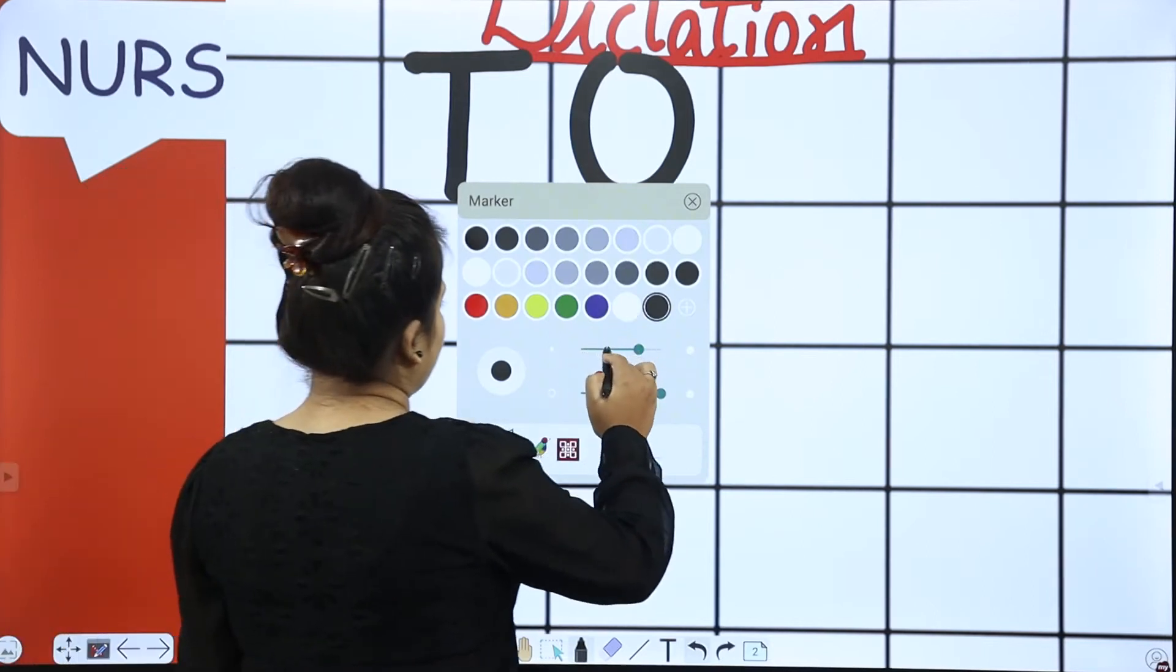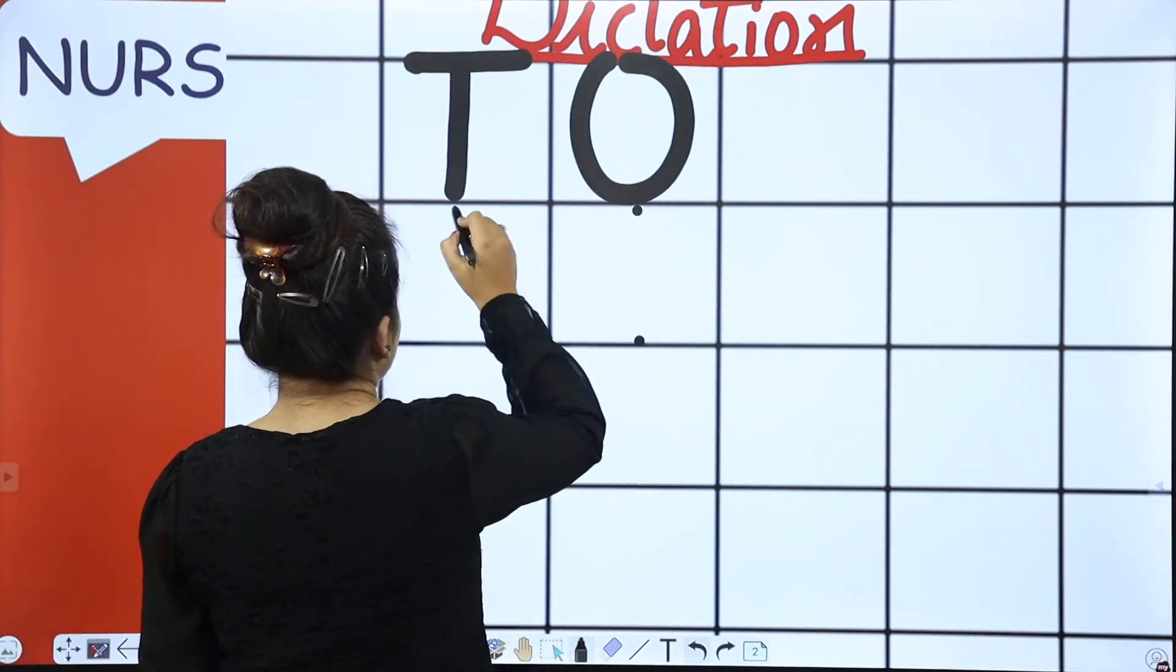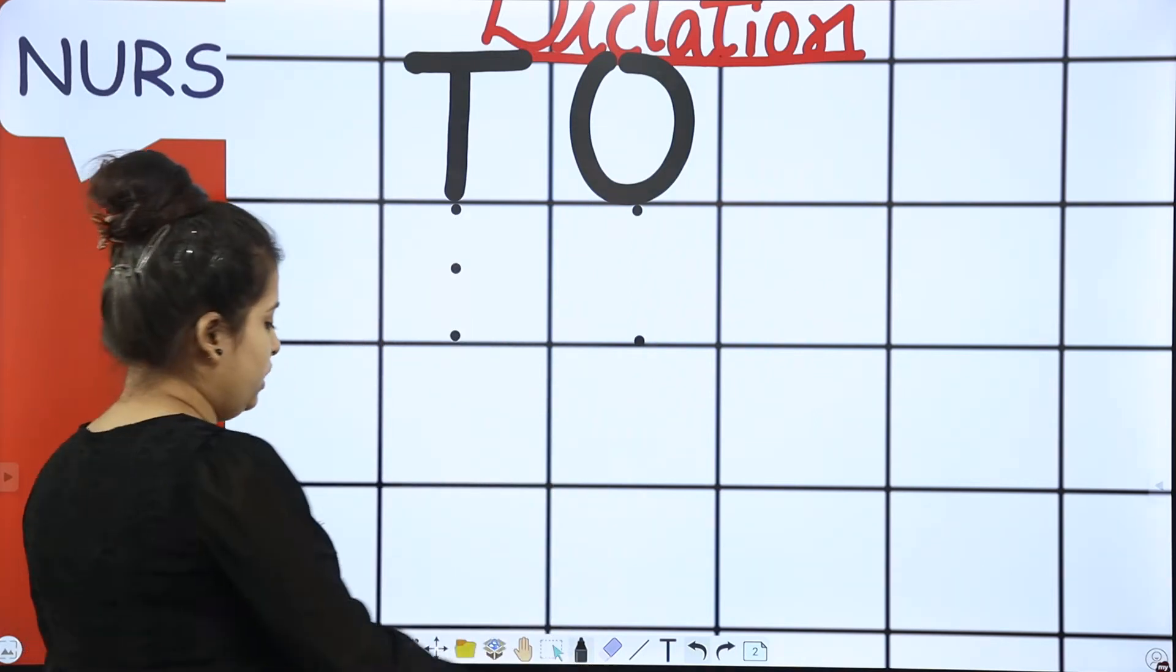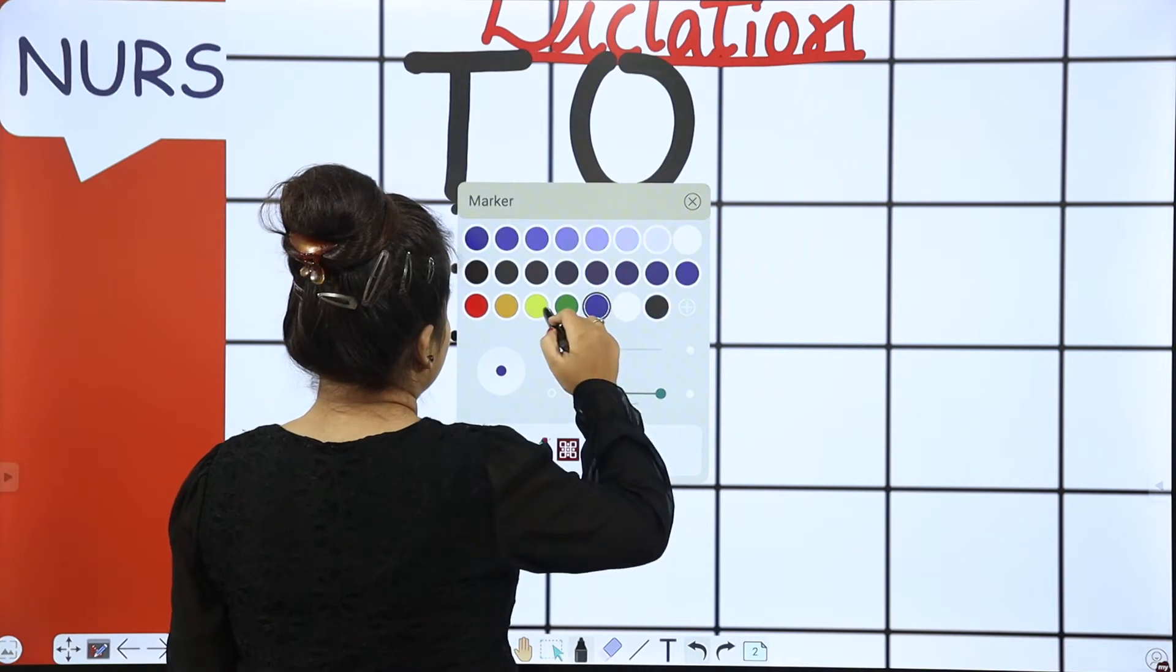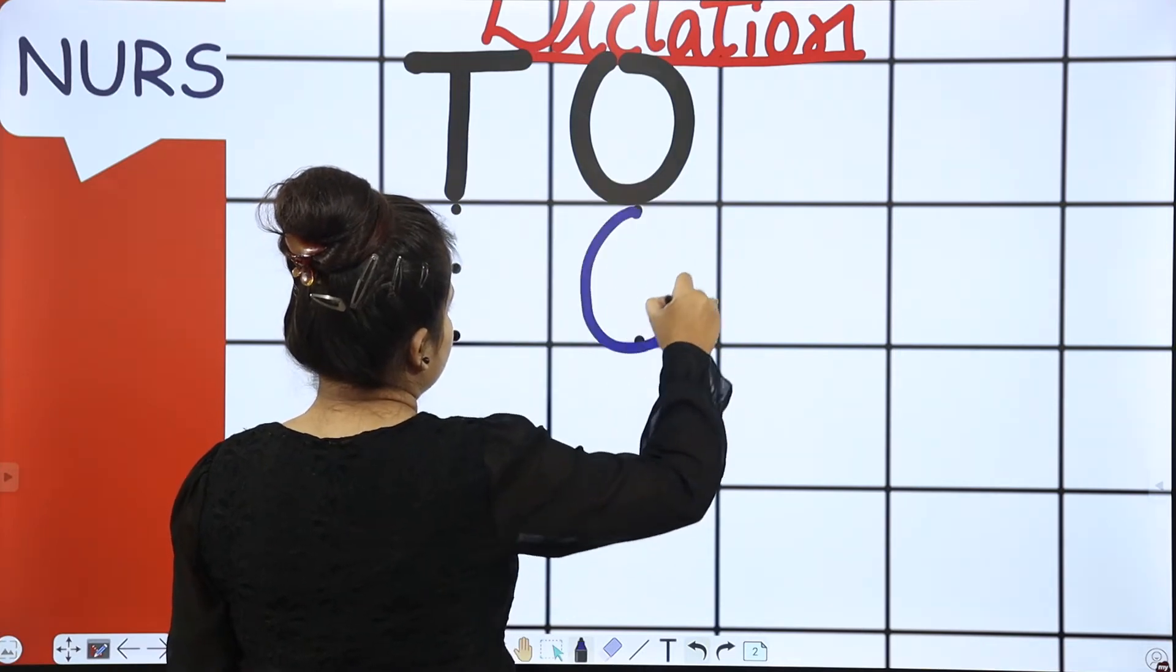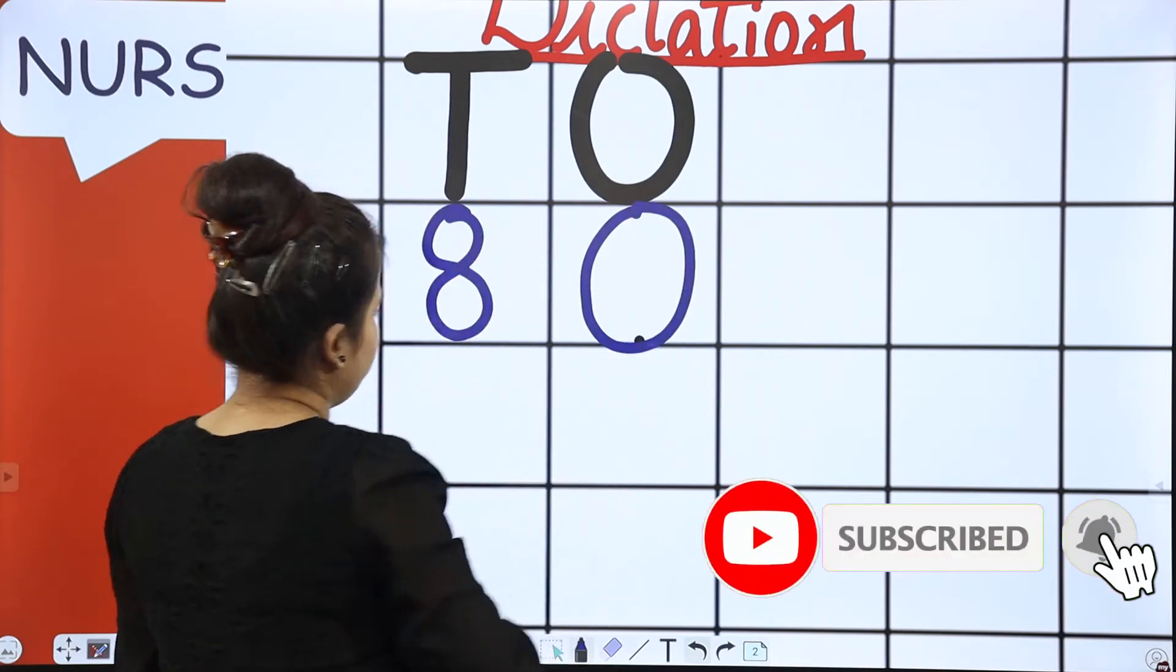So I am putting dots for you. You can check from the board. Done. 80. Okay?